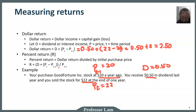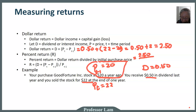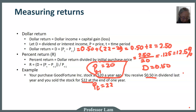Next, we compute the percentage return. The percentage return is the dollar return divided by the initial purchase price. Our dollar return is two dollars and fifty cents divided by the initial purchase price of twenty dollars, which equals 0.125 or twelve point five percent. I encourage you to pause the video and verify that you understand the calculation in detail.